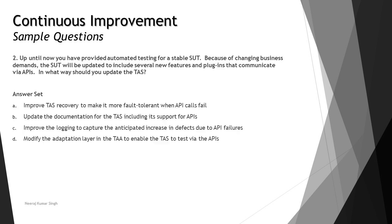Question number two: up until now you have provided automated testing for a stable SUT. Because of changing business demands, the SUT will be updated to include several new features and plugins that communicate via APIs. In what way should you update the TAS? This question relates to how APIs come into the picture when improving automation solutions.